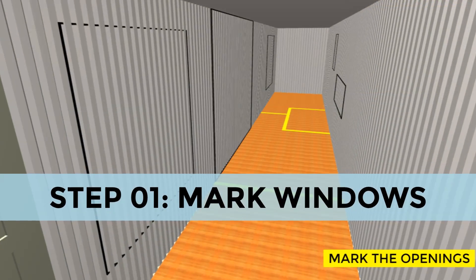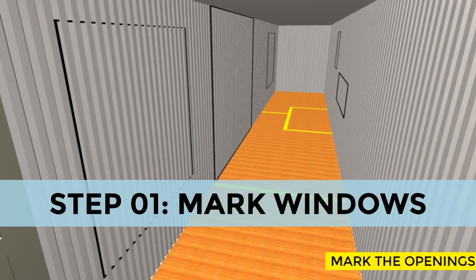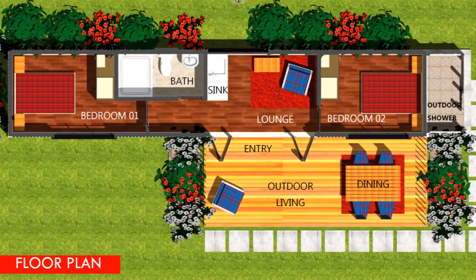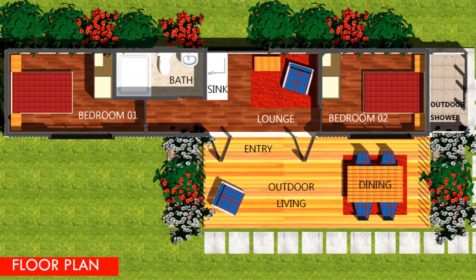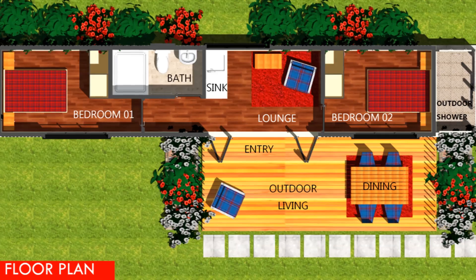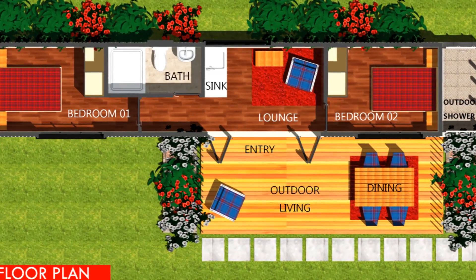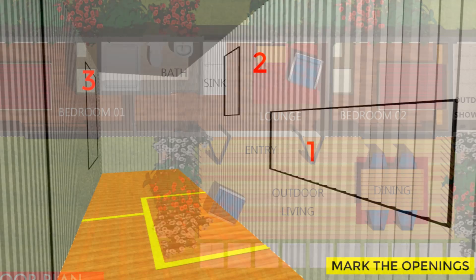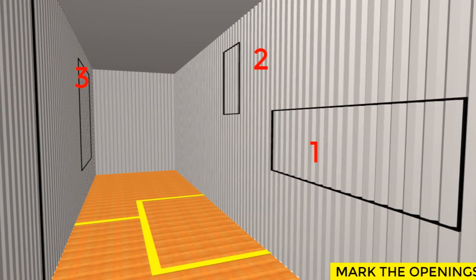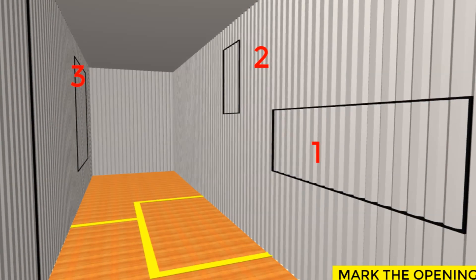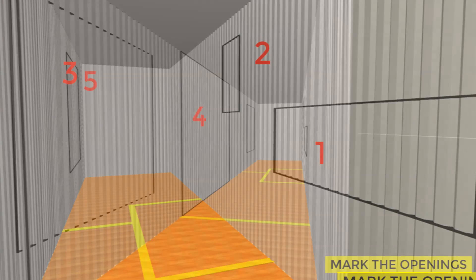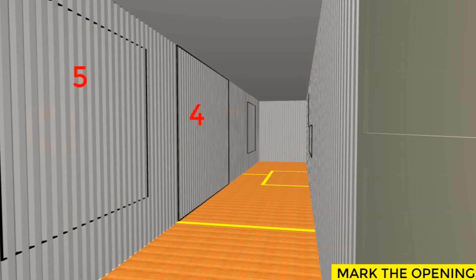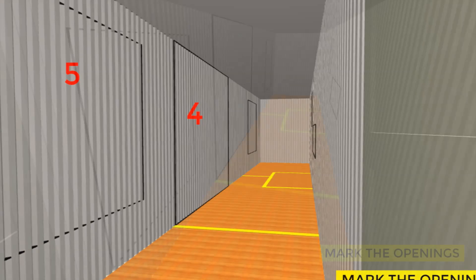The first step is to mark out the position of your window openings. Mark out the position of internal partitions first to help you locate and position the windows correctly. It is always advisable to have a window in every habitable space for sufficient daylighting and adequate ventilation whenever possible.